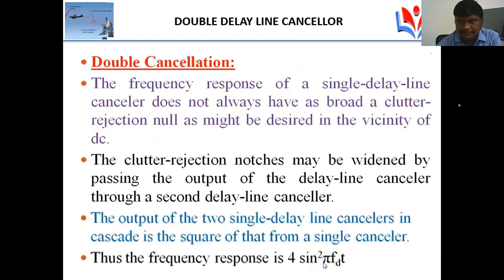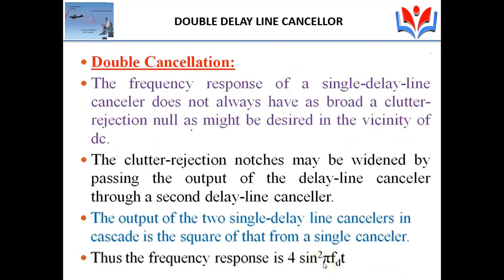What is the double delay line canceller? The frequency response of a single delay line canceller does not always provide as broad a clutter rejection value as might be desired in certain cases. The clutter rejection notch may be widened by passing the output of the delay line canceller through a second delay line canceller. In order to extract moving targets from static targets or clutter, we use a double delay line canceller, which will reject clutter somewhat better than the single delay line canceller.